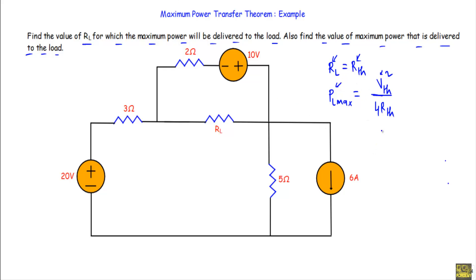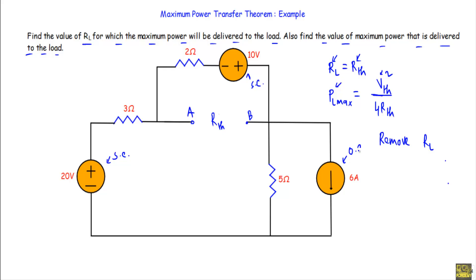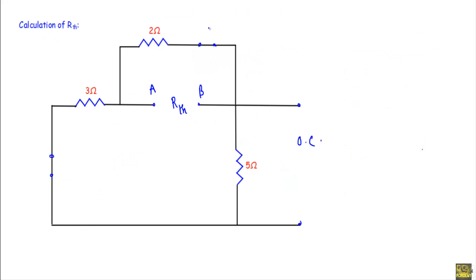To calculate Thevenin resistance of the circuit, first we have to remove the load resistor R_L from the network. After removing R_L, with respect to the two terminals, we will calculate R_th and V_th. When calculating R_th, we will replace the voltage sources with short circuits and the current sources with open circuits. When calculating V_th, we will measure it with respect to these two terminals.